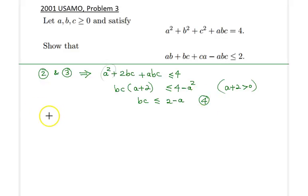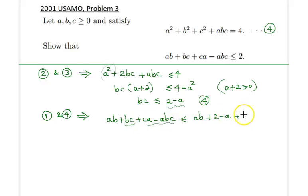All I will do now is combine the first and this fourth relationship. Therefore I would get ab + bc + ca - abc less than or equal to ab, and I'm going to replace bc with this new thing here, plus 2 - a, plus, and I will group these things here. Therefore ac, I believe it is 1 - b here.